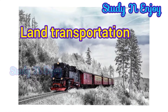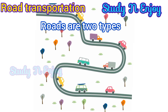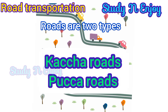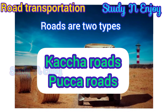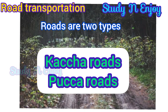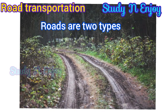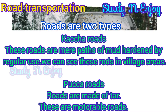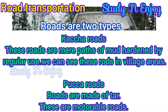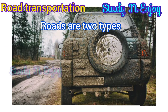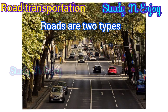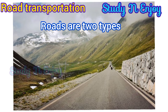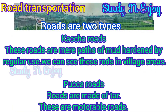First is road transportation. The earliest roads were mere paths of mud hardened by regular use. Now we can see these types of roads in village areas. These are called Kaccha roads or unmetalled roads. Remote areas in villages are linked with these Kaccha roads, while cities have Paka roads — that is, metalled roads or roads made of tar. These are motorable roads.